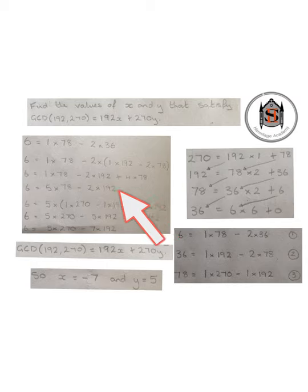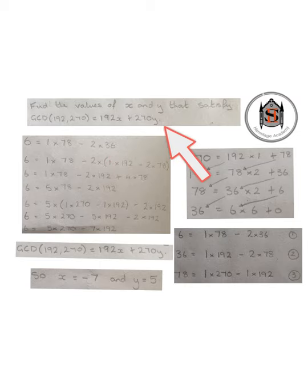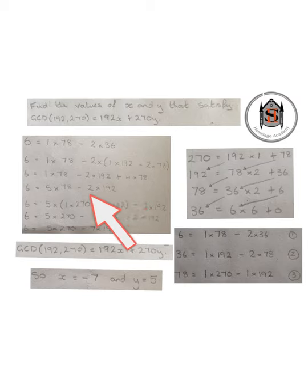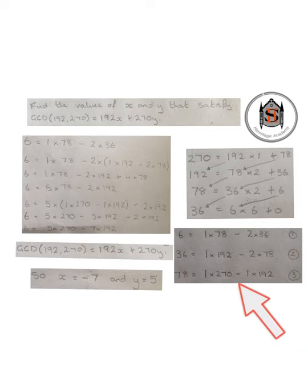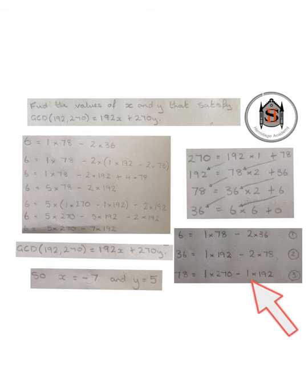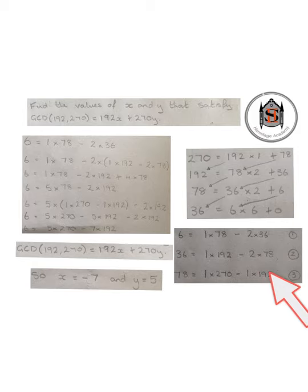Remember the goal is to get an equation with 192x plus 270y, and you can see it's starting to take that form. But we don't want 78 in the equation. Using equation number 3, we know that 78 equals 1 times 270 minus 1 times 192, so we can substitute this in for the 78.